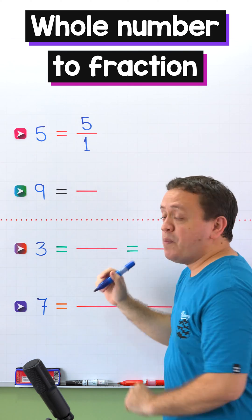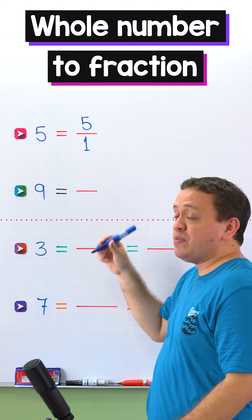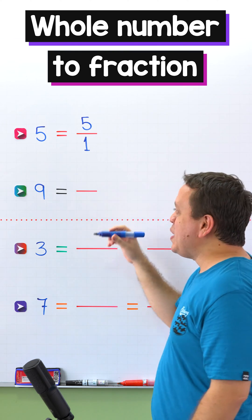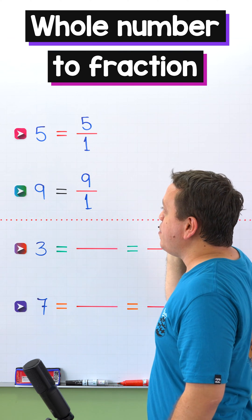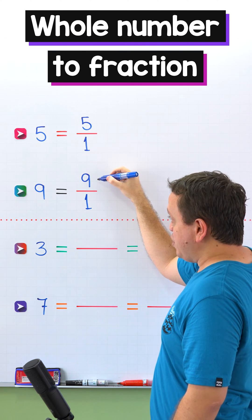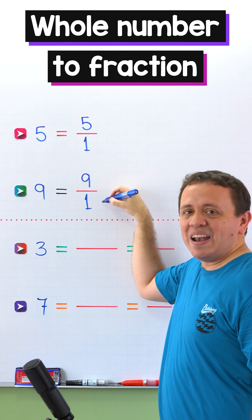Nice! In the second example, we will convert 9 to a fraction, and we already know that the easiest way to convert a whole number to a fraction is by putting 1 as a denominator. 9 becomes the numerator of a fraction where the denominator is 1.